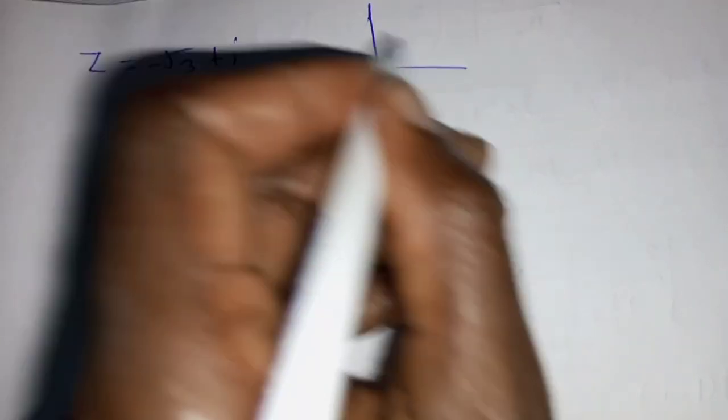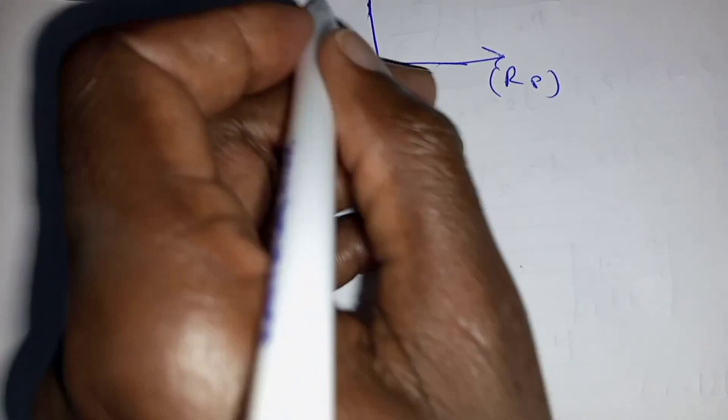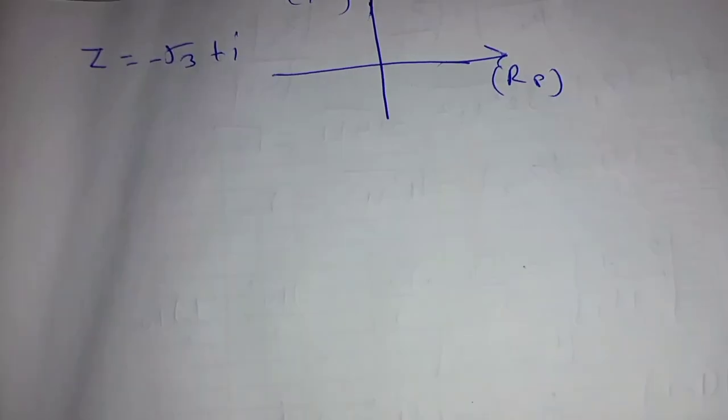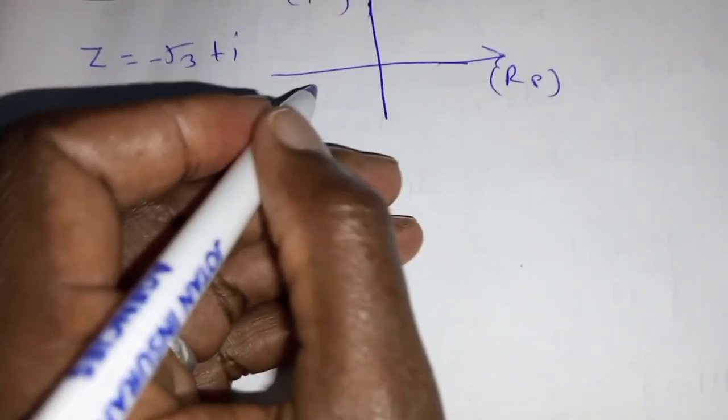The first thing you can do is sketch this case. You have the x-axis as the real part and you have the imaginary on the y-axis. In this case, negative root 3 is somewhere here, and i.